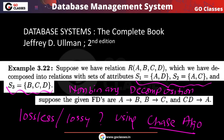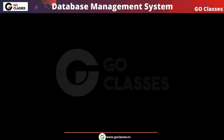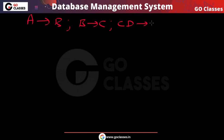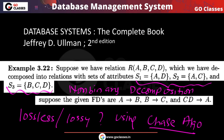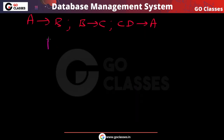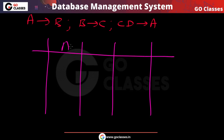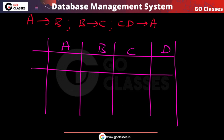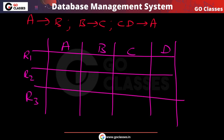First, notice the functional dependencies: A determines B, B determines C, and CD determines A. We have four attributes and three sub-relations. Now we will create the table — there are four attributes A, B, C, D and three relations R1, R2, R3.